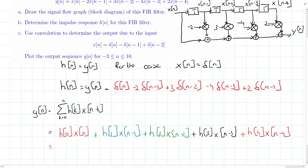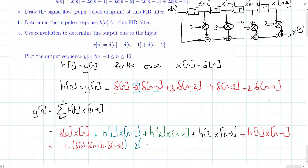At n=0, the last four delta pulses are zero; only the first term of the impulse response exists with value 1. So for k=0: 1 times x[n] = δ[n] - δ[n-1] + δ[n-2]. For k=1, only this delta pulse exists with weight -2, so we have -2 times x[n-1] = -2δ[n-1] + 2δ[n-2] - 2δ[n-3].